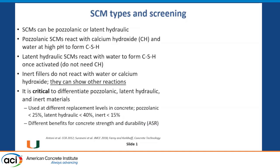Now, why do we care? Why do we have to differentiate between these three SCMs? My opinion is that even an inert material can be used in concrete — it's important to use materials that reduce the overall cement or PLC content. The replacement levels vary very significantly: inert materials are probably less than 15%, pozzolanic less than 25%, latent hydraulic less than 45%, just as guides. These materials have very different benefits for concrete strength and durability. The idea for differentiating these materials and measuring reactivity is not to say 'do not use these materials' — it's just to say use them for a different purpose and in a different way.